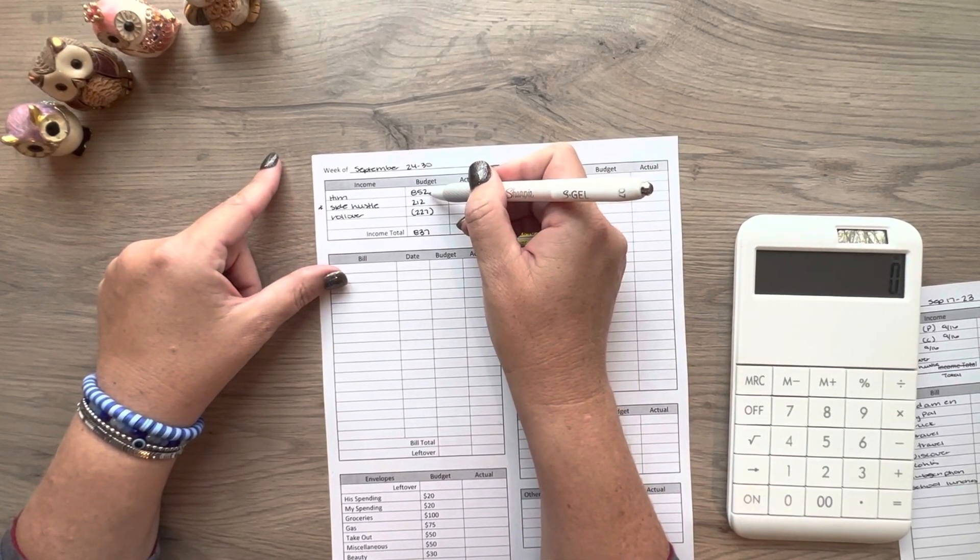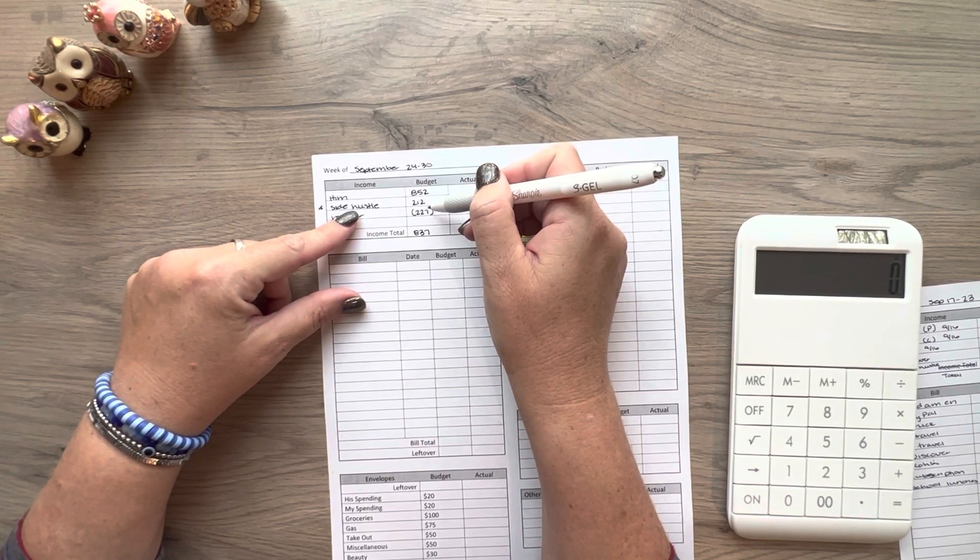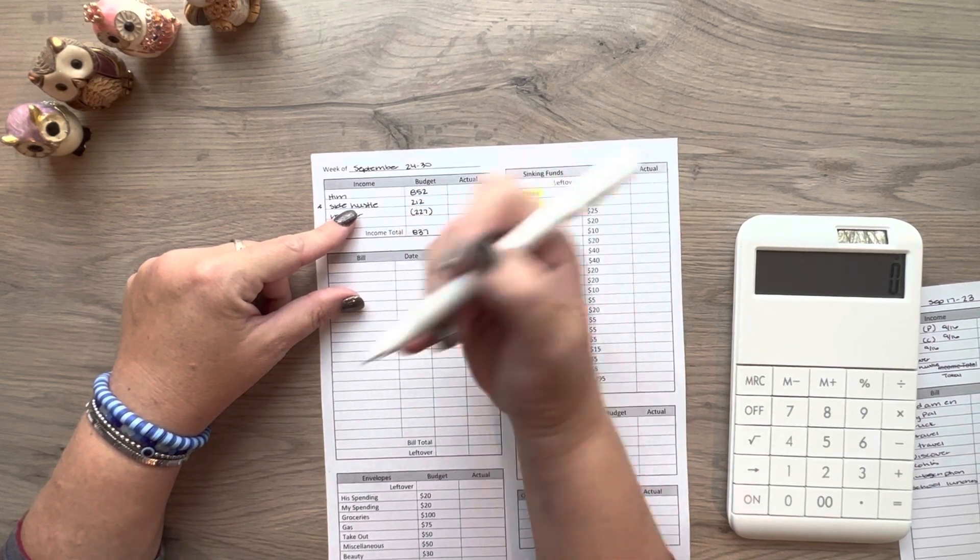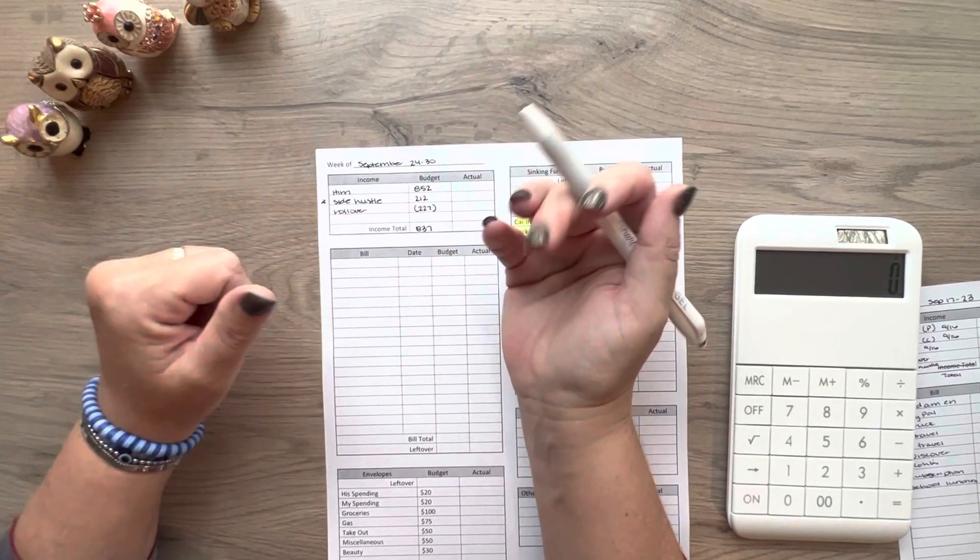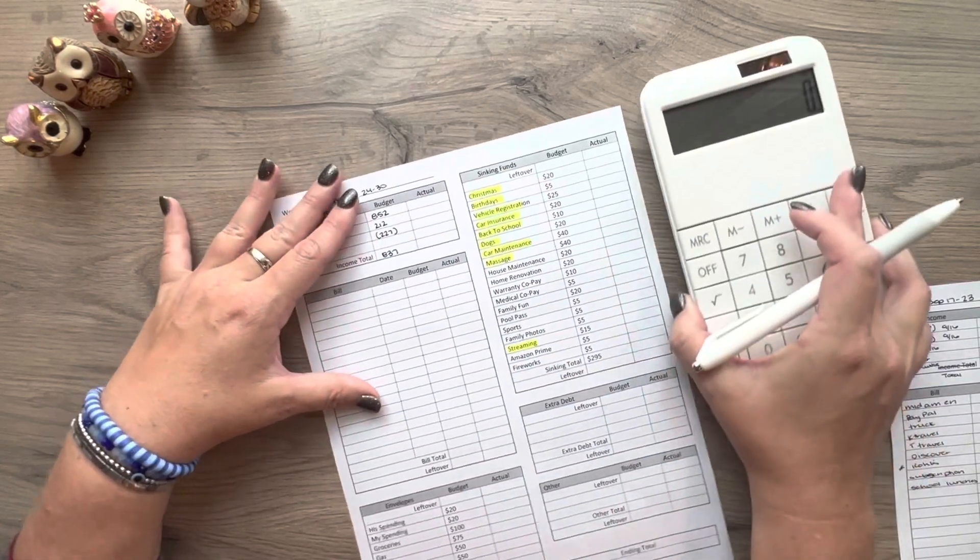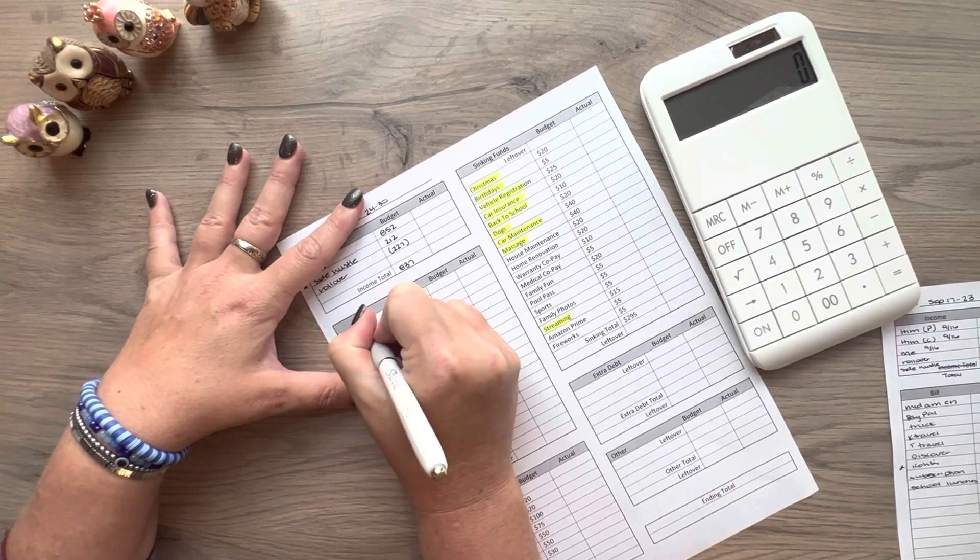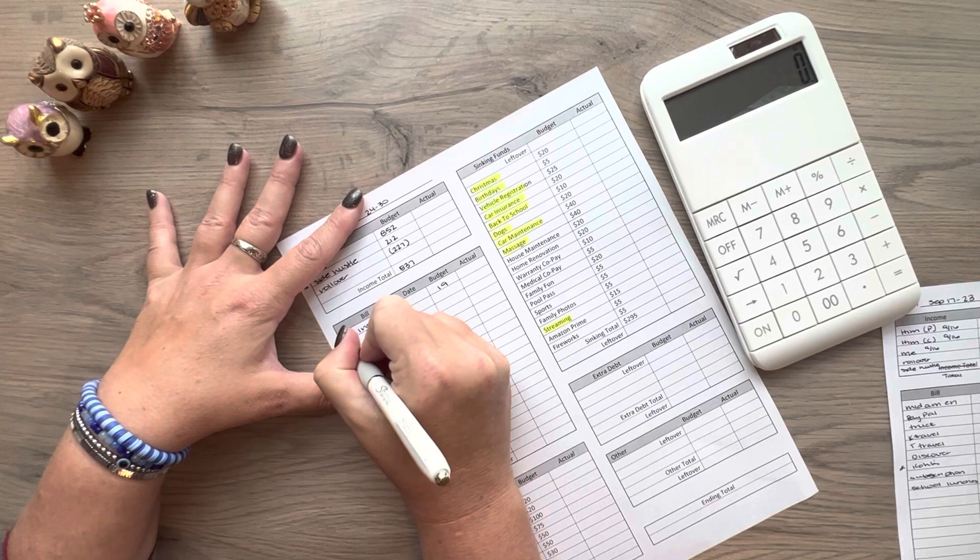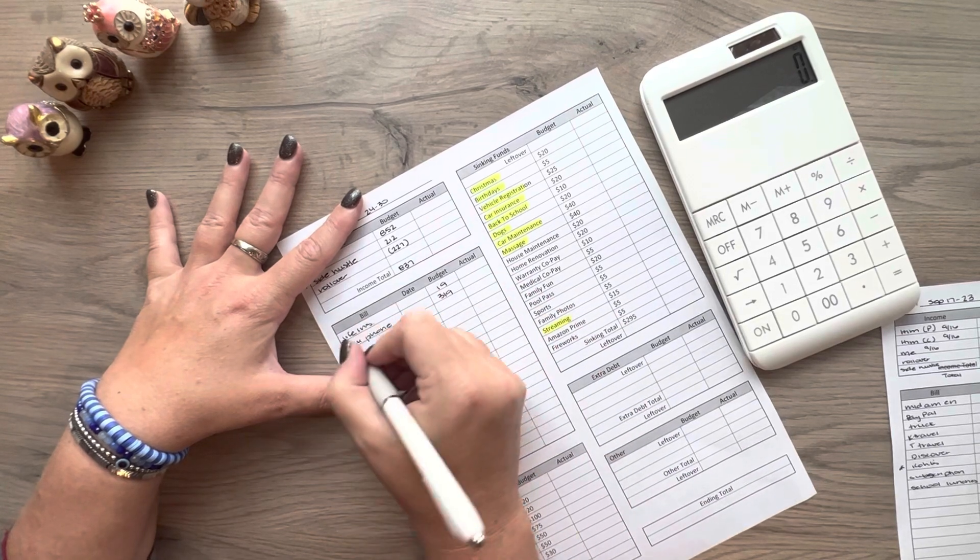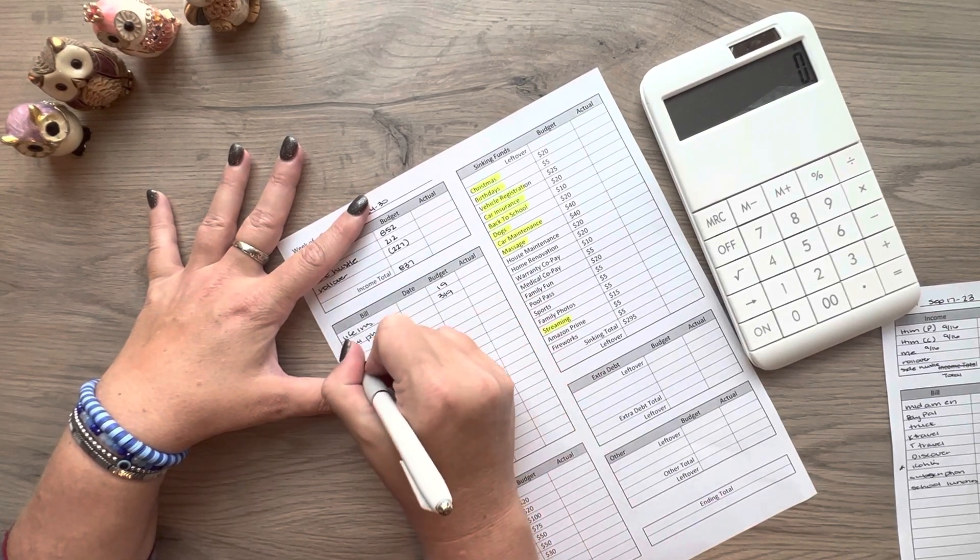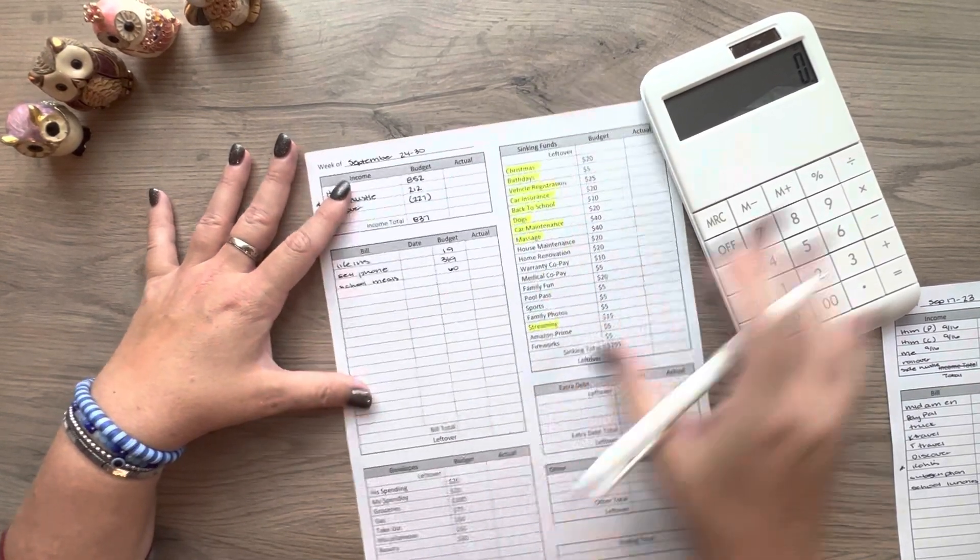And my husband to get paid 852. It actually should have been more. They messed up on the pay rate that he was supposed to be getting. So they're supposed to be giving him back pay, but I don't know if it's going to go on this next Friday check or if it'll be a week after that. So I'm just glad that we caught it. And we only have a couple of bills coming out this week. We have life insurance for 19, our cell phone bill. I always budget 350, but it was actually 319. So that's good. And then school meals for 60.